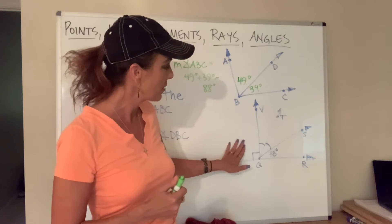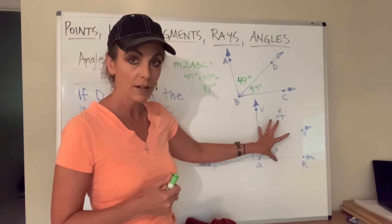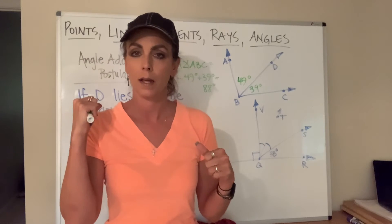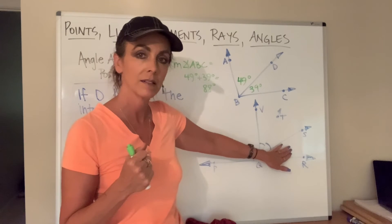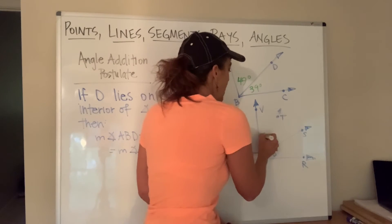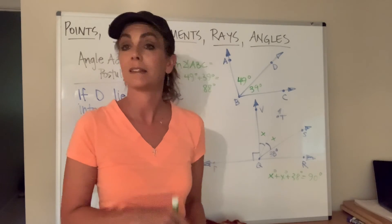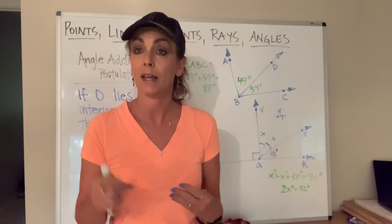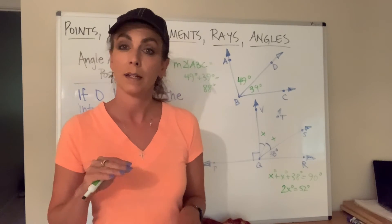I know that this side is 90 degrees. That would mean that this side is also 90 degrees because we have a ray that's perpendicular and forms a 90-degree angle to this line. If this is 90 degrees and these two angles are congruent, and I know this piece is 38 degrees, all three of these together must equal 90 degrees. Using algebra and the angle addition postulate, I can say X degrees plus X degrees plus 38 degrees equals 90 degrees. Subtracting 38 and combining like terms gives 2X equals 52 degrees. Dividing by two, X equals 26.